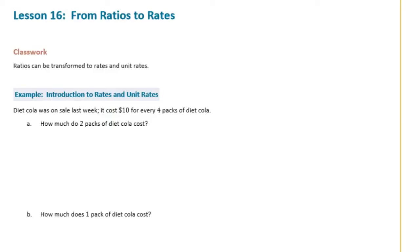Let's make a chart so that it looks familiar to what we've been working on. So we have Diet Cola. It costs $10 for every four packs. So let's say price and packs. It costs $10 for every four packs. We want to know how much do two packs cost?